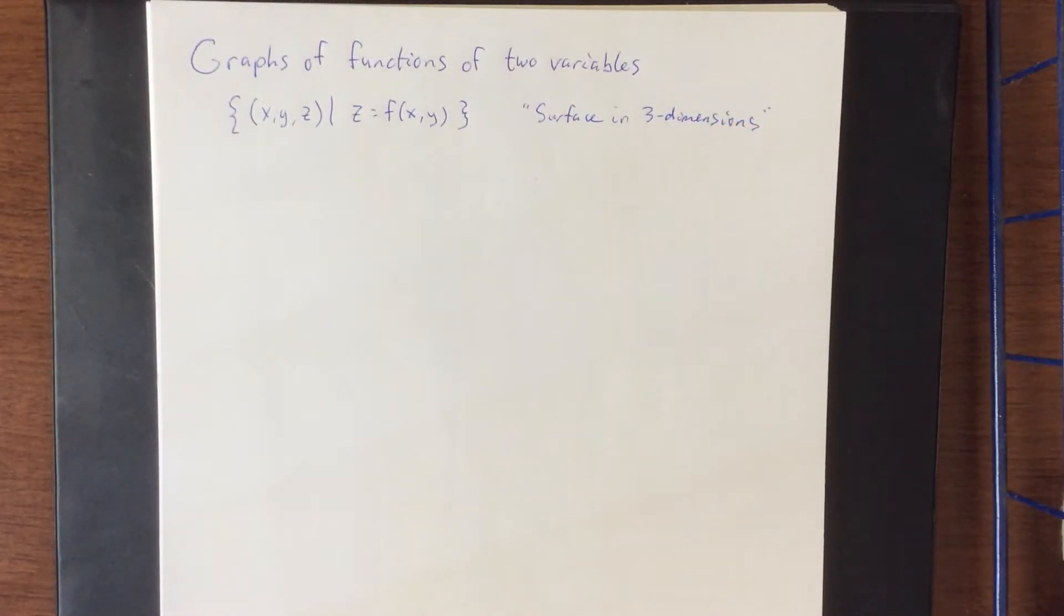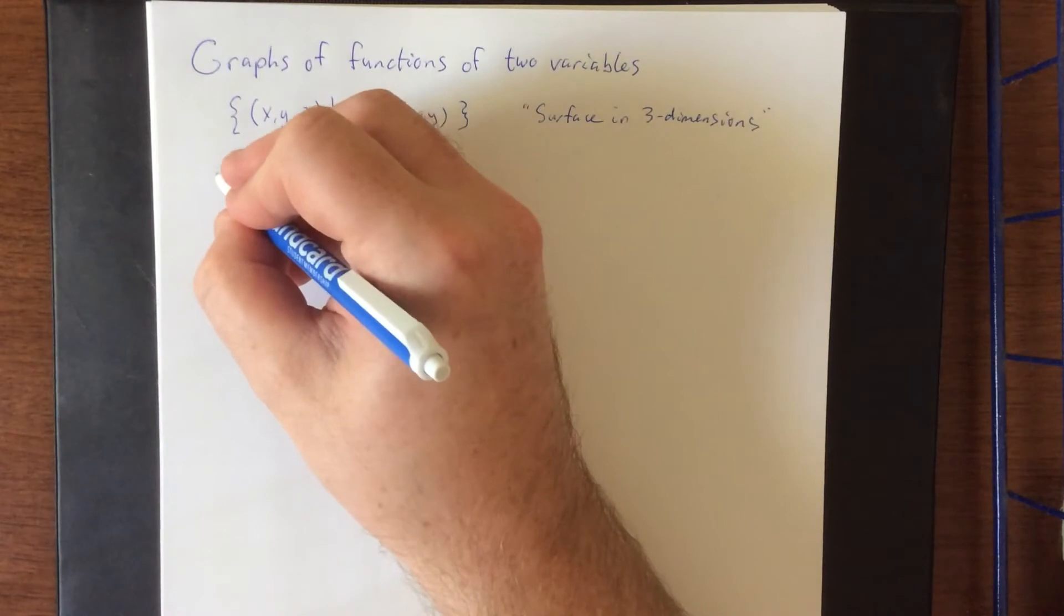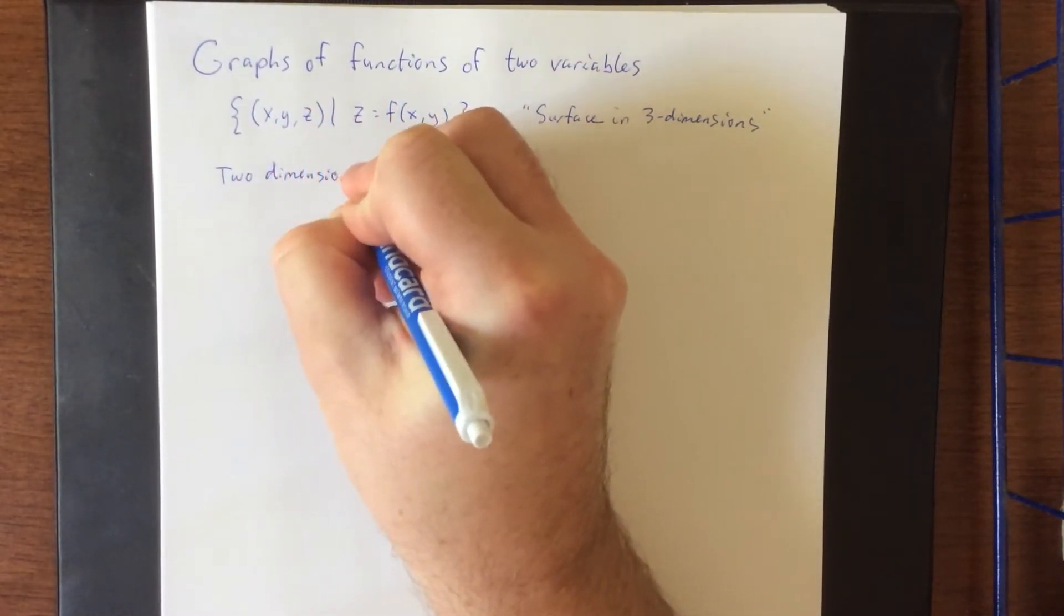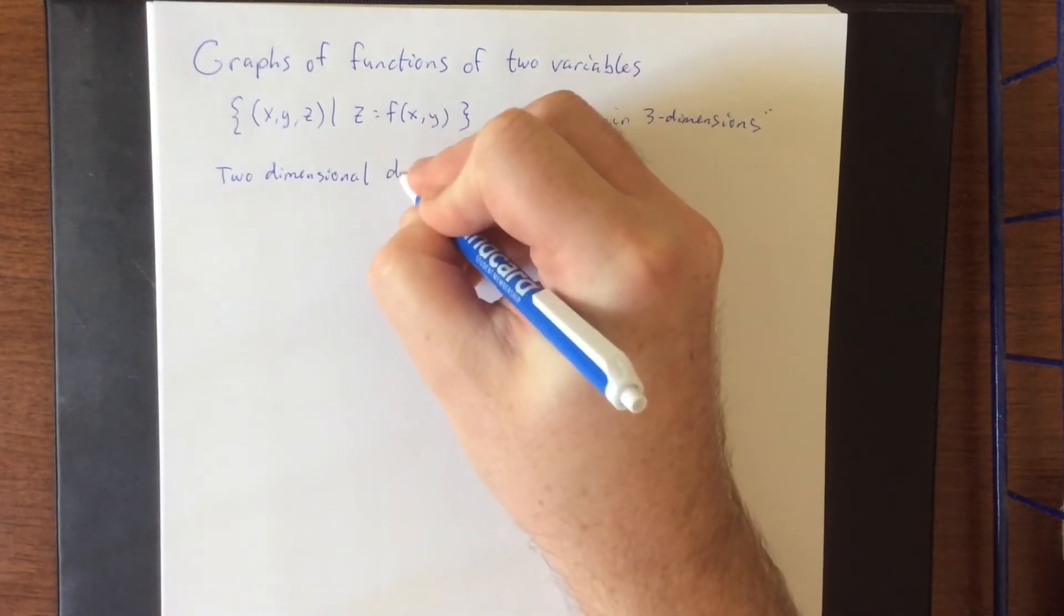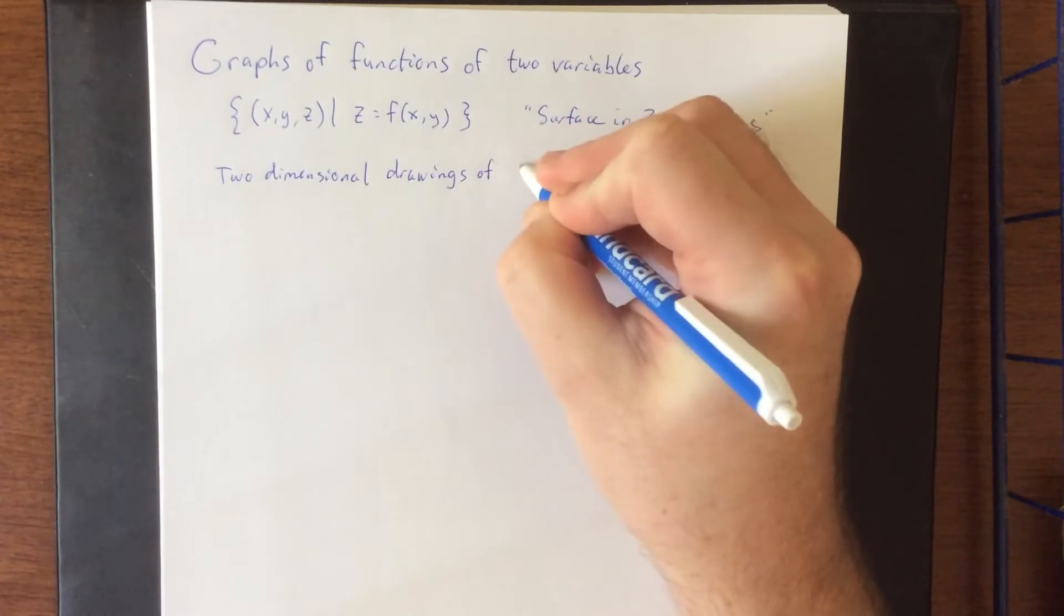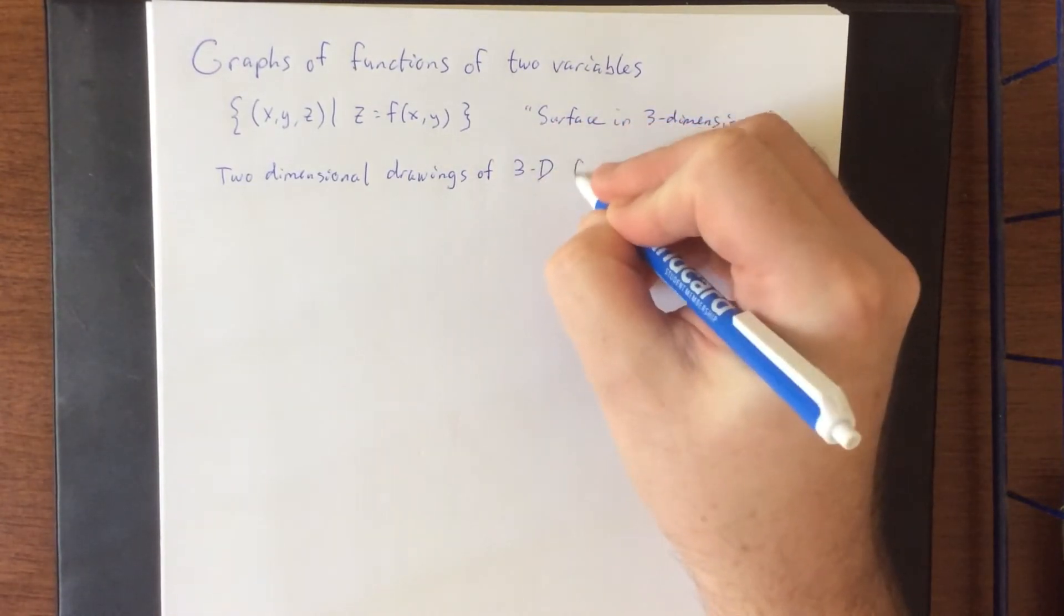So for functions of one variable, we had curves that existed within the x-y plane. For functions of two variables, we're going to have surfaces that exist within Euclidean space. Now it's very difficult to draw things in three dimensions, especially when you only have access to a two-dimensional surface like this one. So there are some two-dimensional renderings of three-dimensional things that we can talk about.